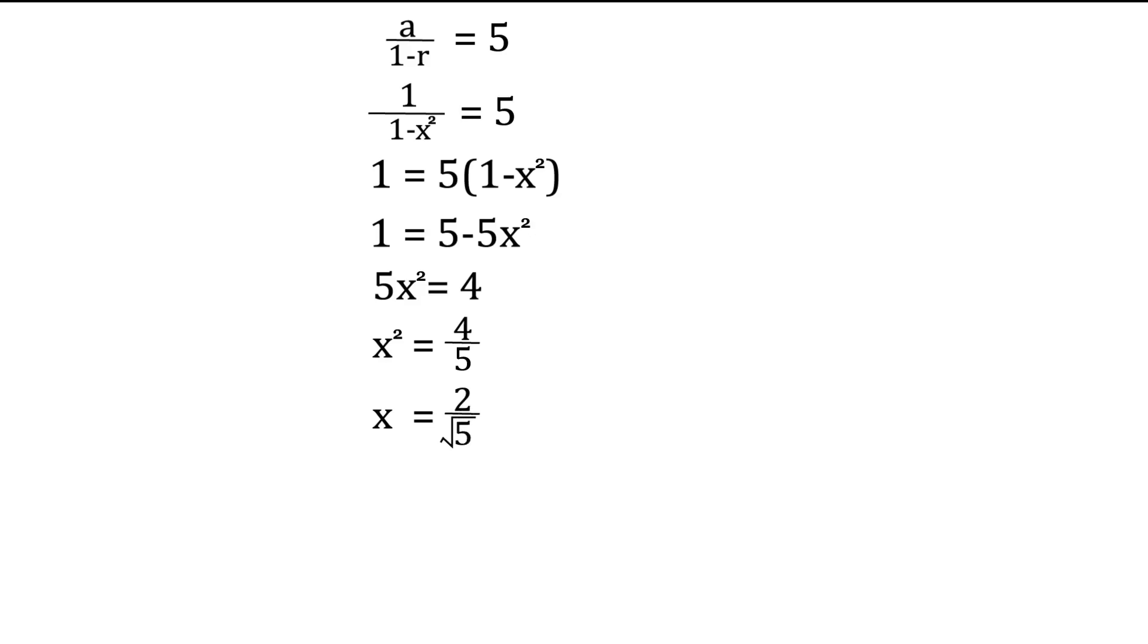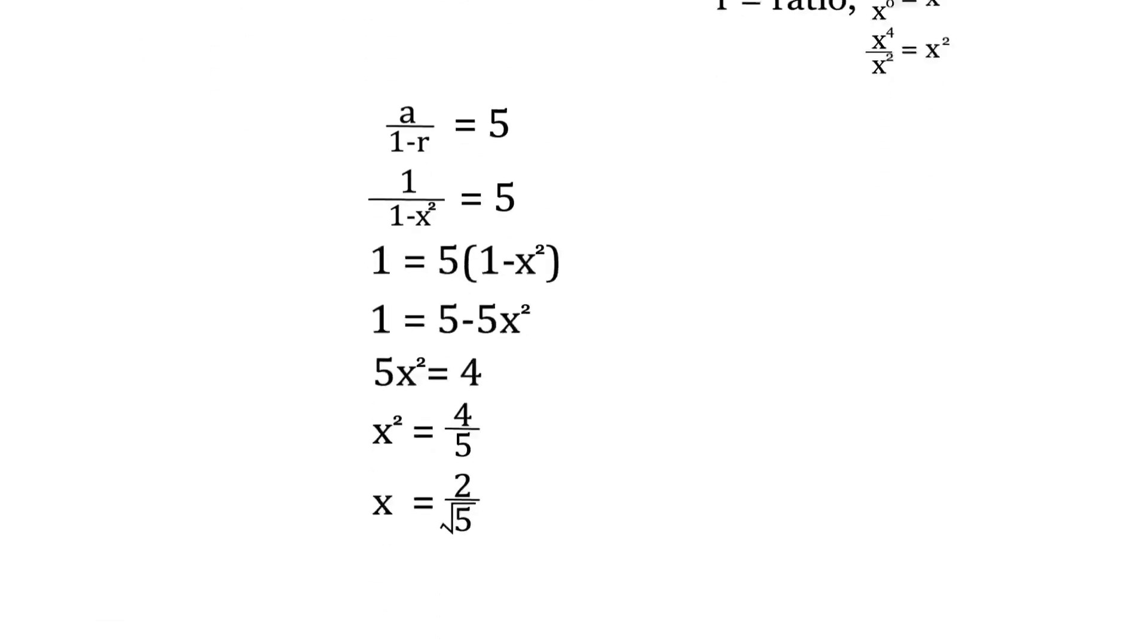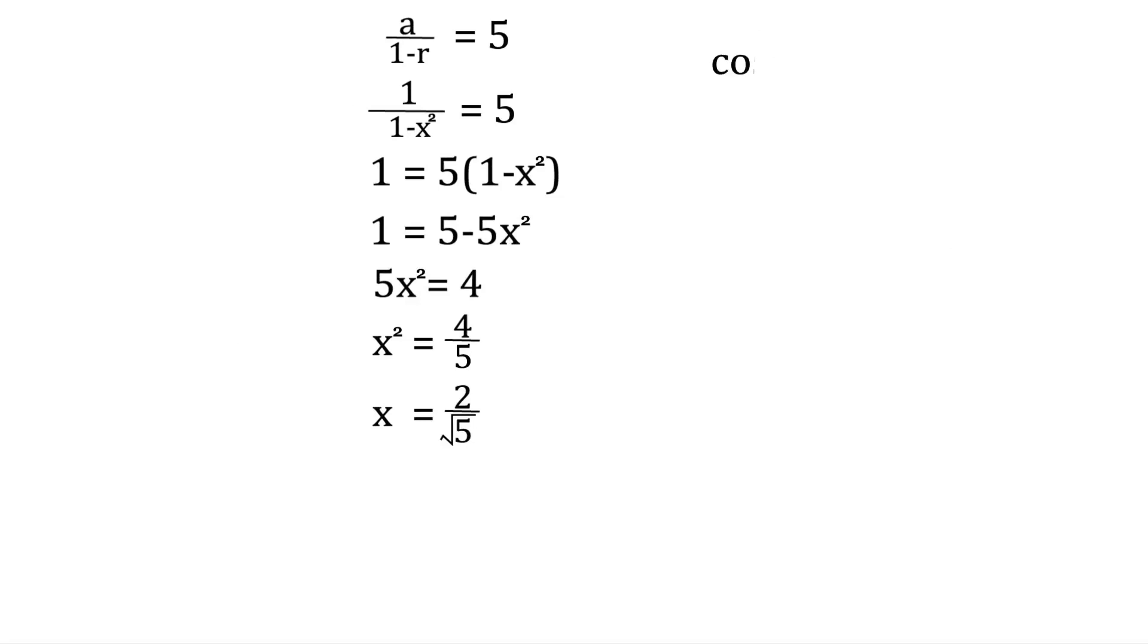So that means, since we let cos theta equal x, that cos theta is equal to 2 over the square root of 5. Now, that's not the value that they want.